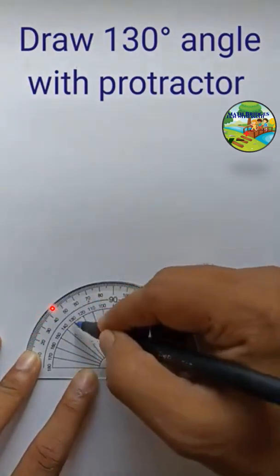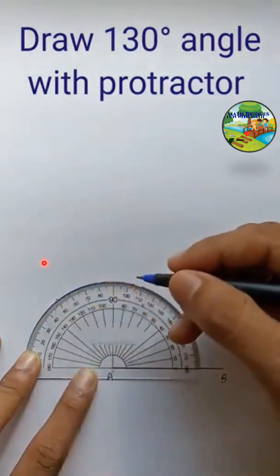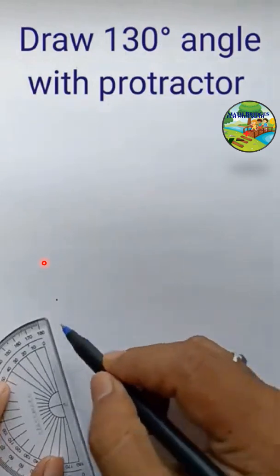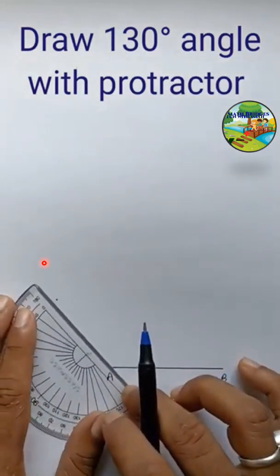You mark the point at 130 degrees now. Now, join the points, extend the line.